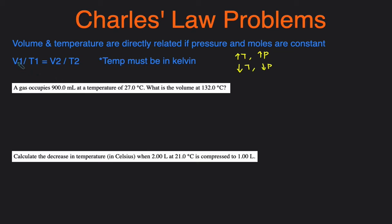The equation associated with Charles' Law is V1 over T1 equals V2 over T2, and temperature must be in Kelvin. Now, let's jump into some example problems.